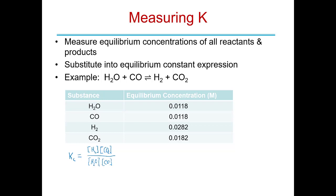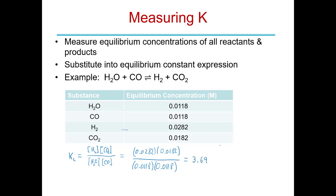Notice that we multiply these terms — we don't add them. Now we just substitute in the numbers. These square brackets represent equilibrium concentrations that we've measured. For H₂ we have 0.0282, for CO₂ we have 0.0182, for H₂O it's 0.0118, and for CO it's also 0.0118. Plugging all those numbers into the calculator gives us 3.69 to three significant figures.